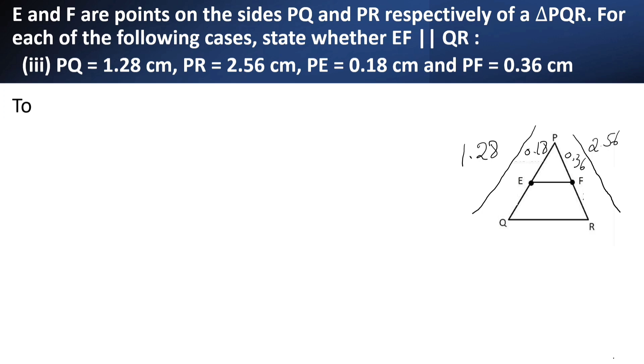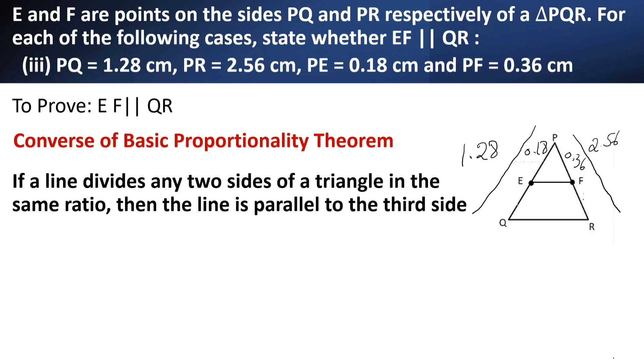Here we have to prove EF is parallel to QR. We can use Converse of basic proportionality theorem here. As it states, if a line divides any two sides of a triangle in the same ratio, then the line is parallel to the third side.